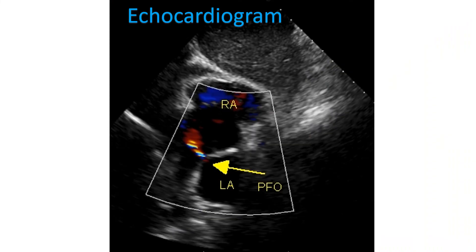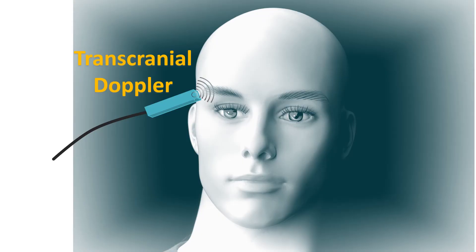PFO can be documented by an ultrasound study of the heart known as echocardiogram, which will also show right-to-left shunting during certain types of strain, suggesting the risk of paradoxical embolism. Another test is transcranial Doppler, an ultrasound study of the head which looks for tiny air bubbles in the blood vessels of the brain. For detecting a right-to-left shunt across the PFO, agitated saline containing tiny air bubbles is injected into a forearm vein. If air bubbles are detected by the transcranial Doppler machine, it is presumed that tiny blood clots can also pass across the PFO to produce a stroke. Right-to-left flow of tiny air bubbles in the agitated saline will also be seen in the left atrium on echocardiogram.